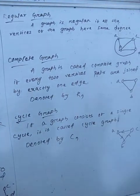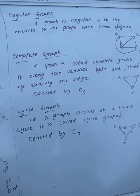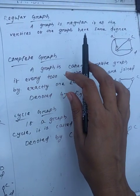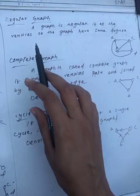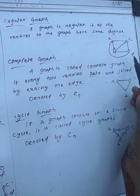Now coming to regular graphs and complete graphs. What is a regular graph? A graph is regular if the vertices of the graph have the same degree.